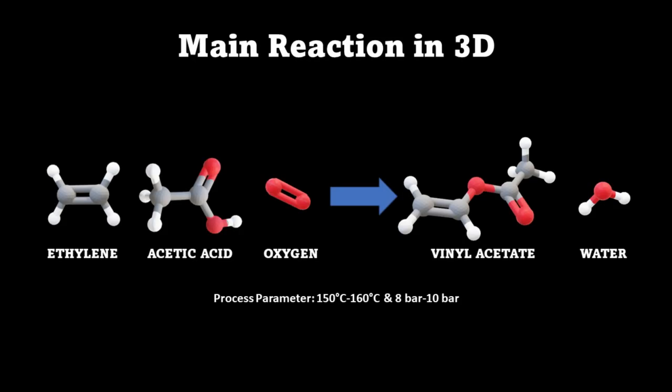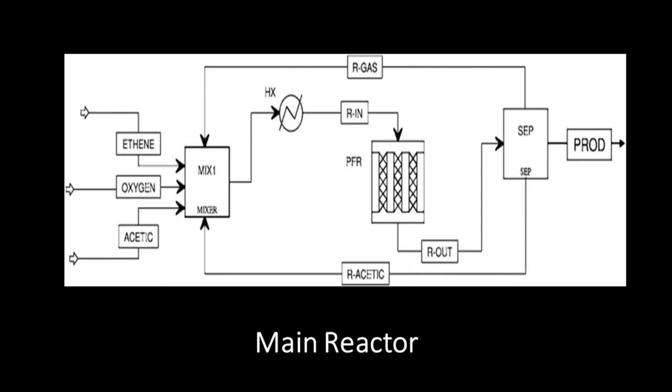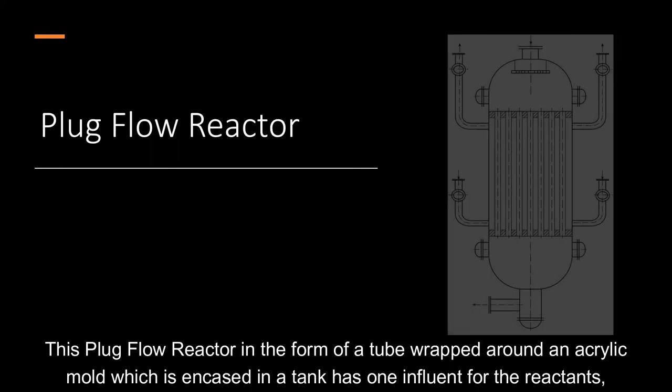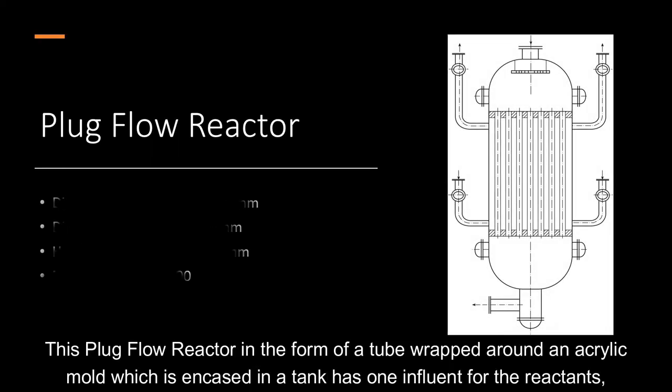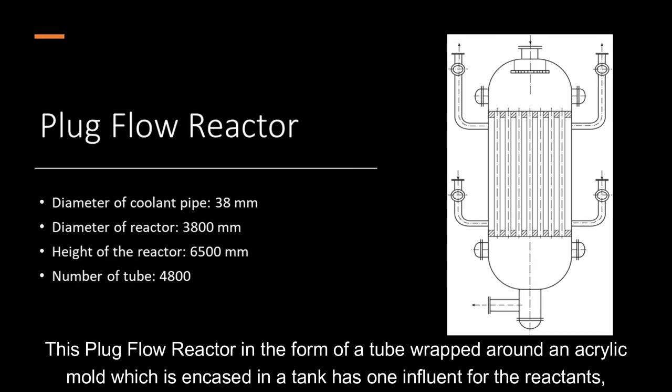This is the 3D model of the main reaction scheme used in vinyl acetate monomer production. The focus is on the plug flow reactor that has been used in this reaction. This plug flow reactor is in the form of a tube wrapped around in an acrylic mold, which is encased in a tank.